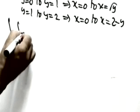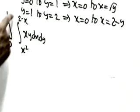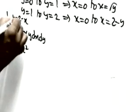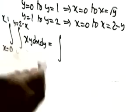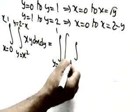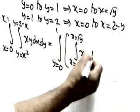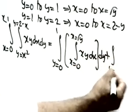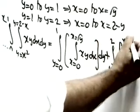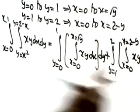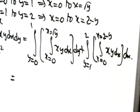The original question is the integration of xy dx dy with limits x squared to 2 minus x and 0 to 1. These are y limits and x limits respectively. After changing the order: from y equals 0 to 1, x goes from 0 to root y; from y equals 1 to 2, x goes from 0 to 2 minus y. So the new integral is the sum of two integrals with xy dx dy.